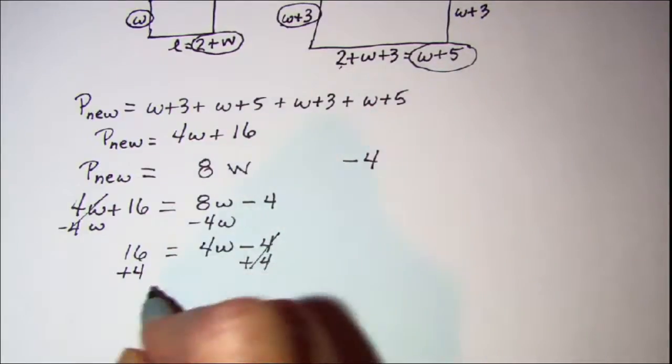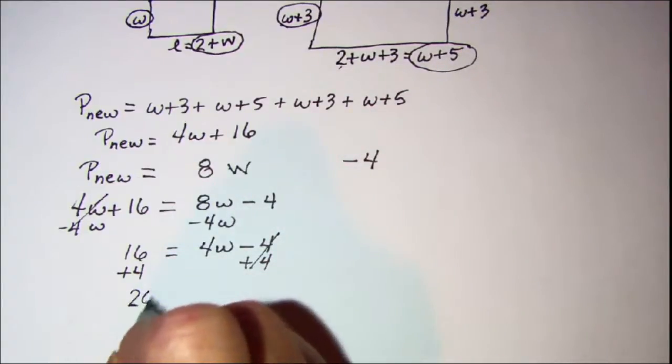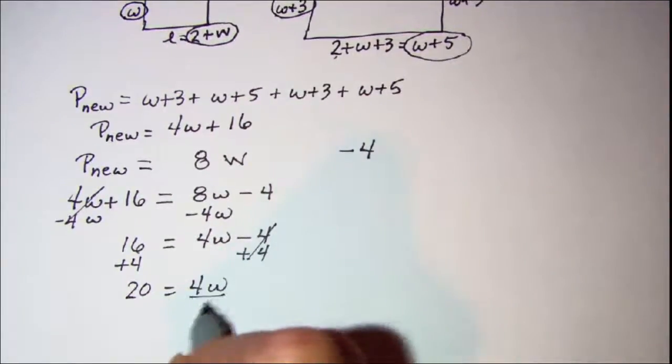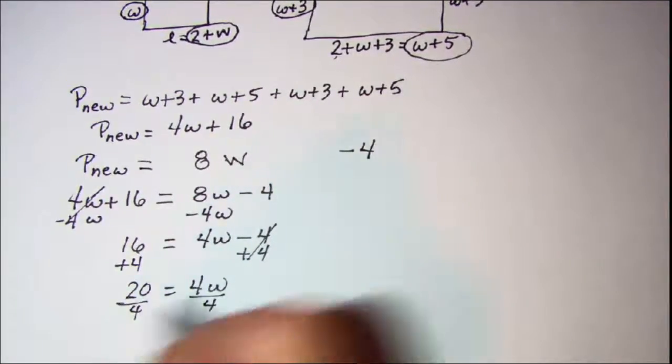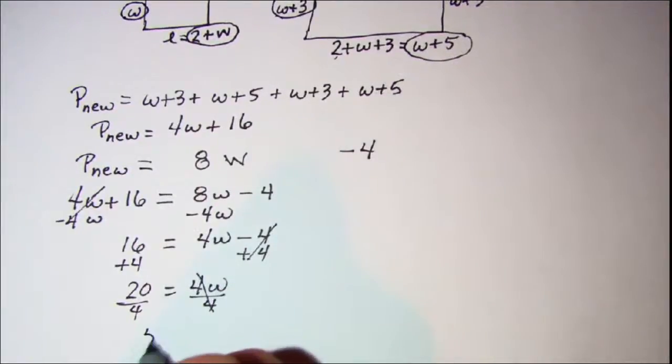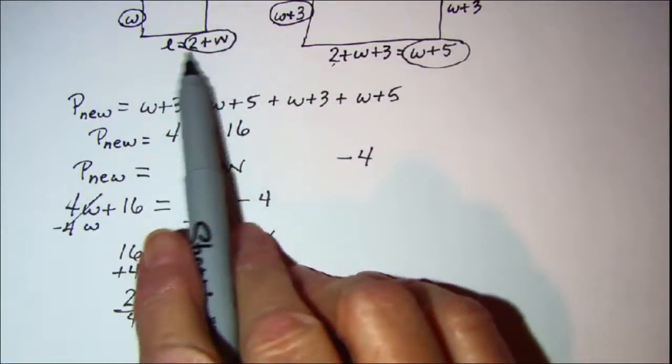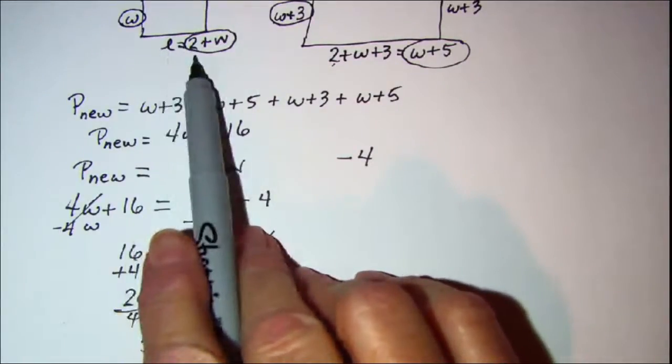These will cancel and I have 20 equals 4W. And then divide by 4. These will cancel and I have 5 equals W.